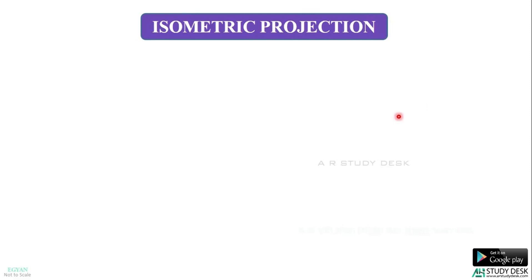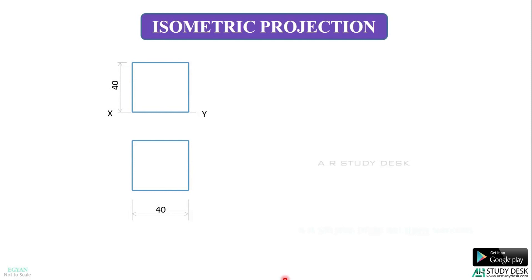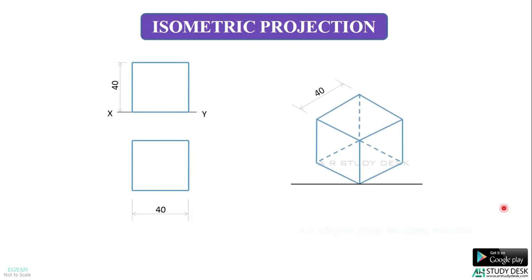Before going to the topic, let me ask you a very simple question. What is this? Being an engineer or an engineering student, you will easily say that this is a cube of side 40. But if I show this to a layman, he might say that these are two squares of sides 40. Now, if I show this figure to that person, he can easily identify that this is a cube of side 40. Why? Because this is a 3D image of the object shown in a single 2D drawing.